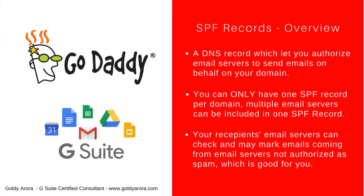When you send emails to your recipients, your recipients would like to check whether these emails are indeed coming from you rather than someone who is pretending to be you. The way you can do that is by telling the whole world that these are the email servers whom you are authorizing to send emails on behalf of your domain. Once you do that, your recipients can then check that the email they received from you indeed came from your authorized email servers, and if it did not, that gives them a reason to mark that email as spam.